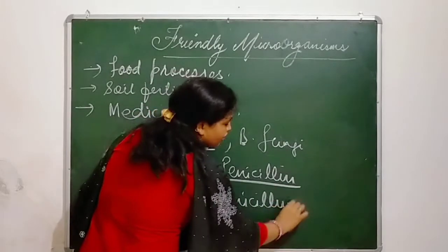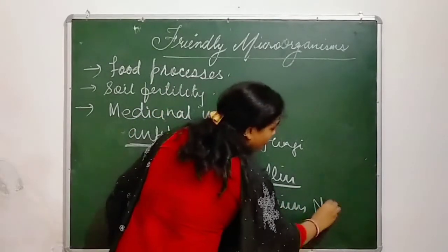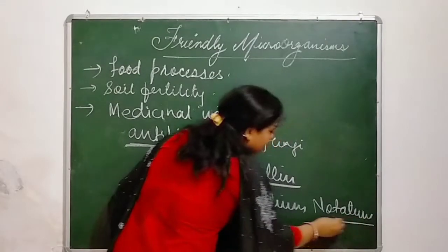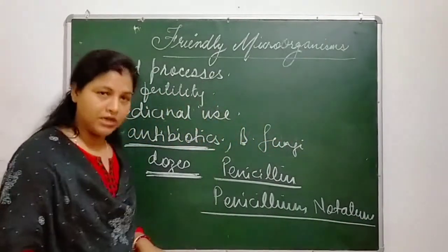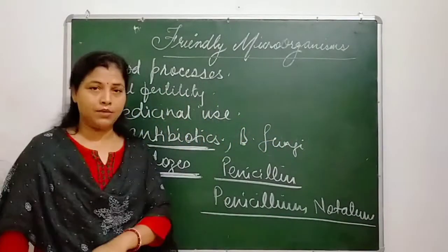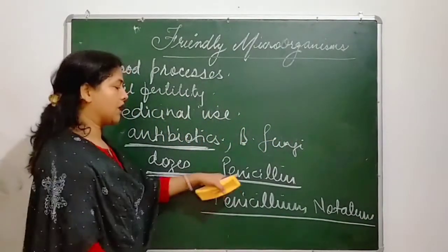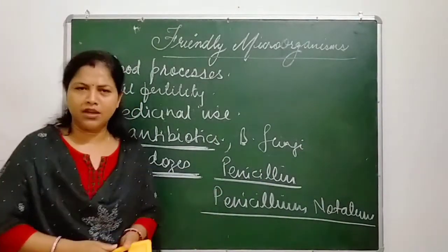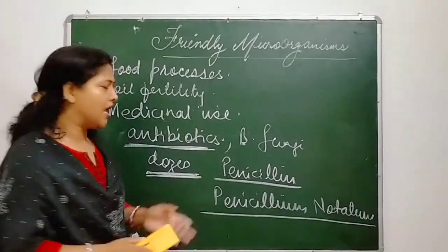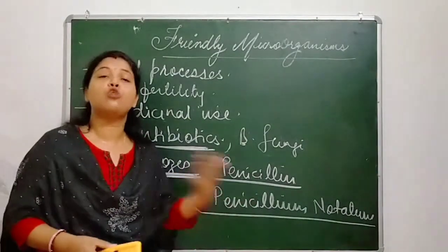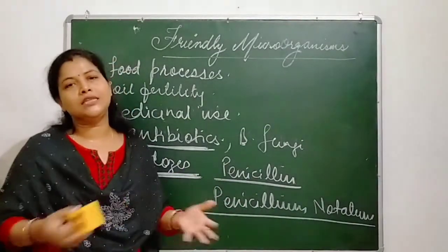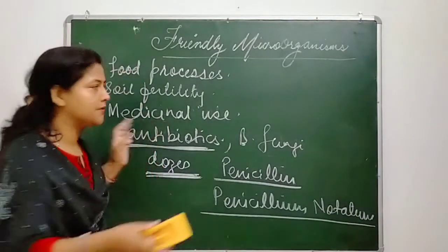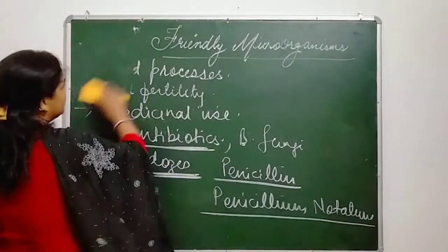Penicillin was extracted from a fungi known as Penicillium notatum. Alexander Fleming first noticed it. He developed a medicine from it and named it penicillin. Now we have so many antibiotics in the market with stronger molecules, and all these antibiotics are given as per the diseases.